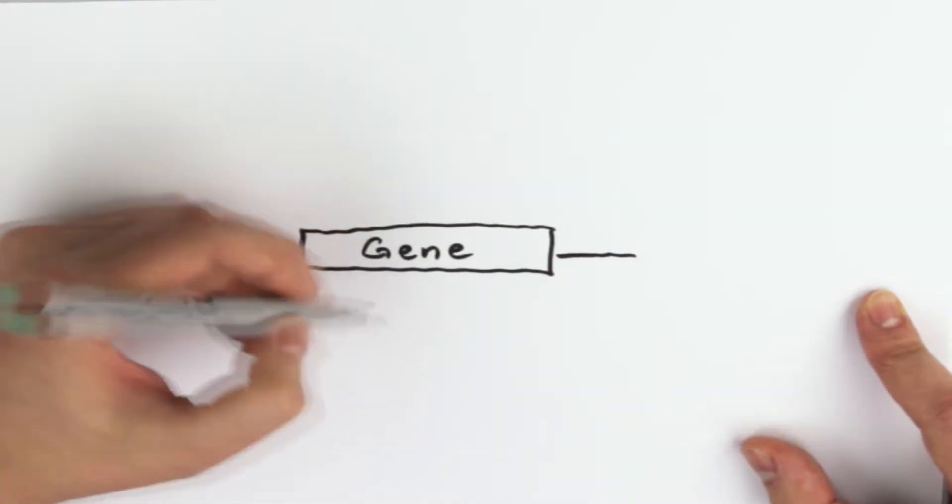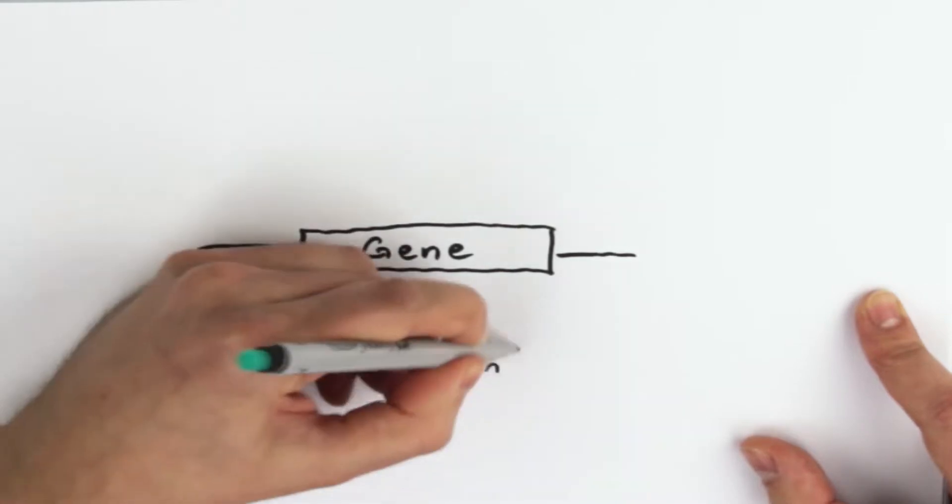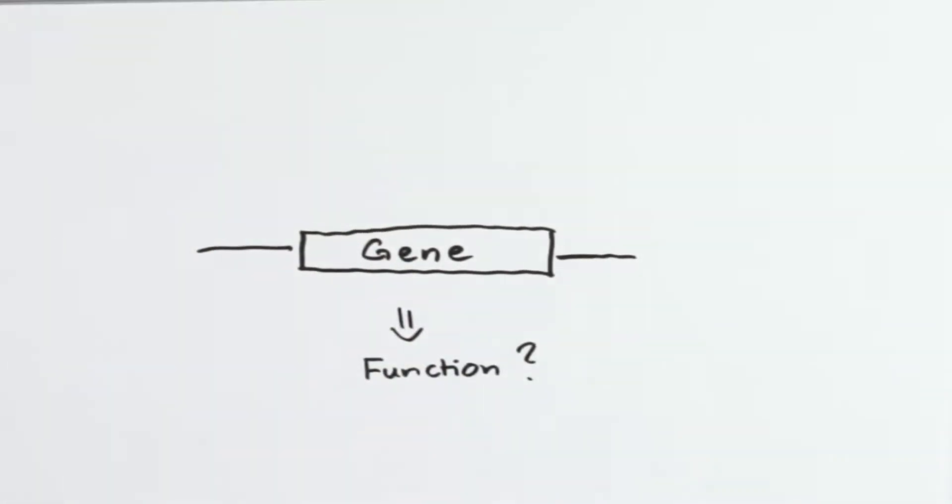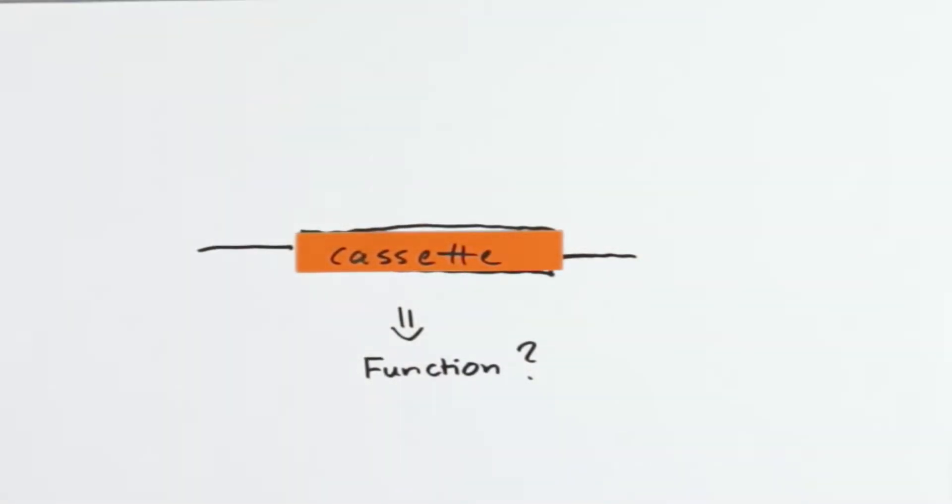In genetics, mutants in single genes are used to understand their function. This is achieved by replacing the gene by a deletion cassette.